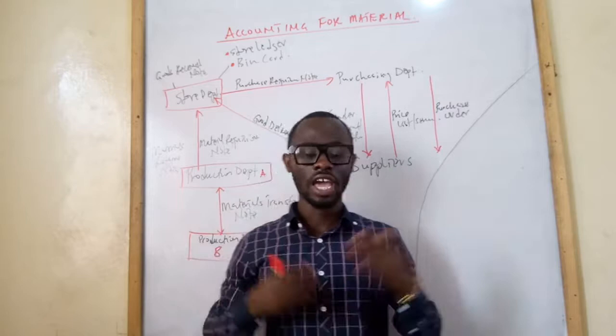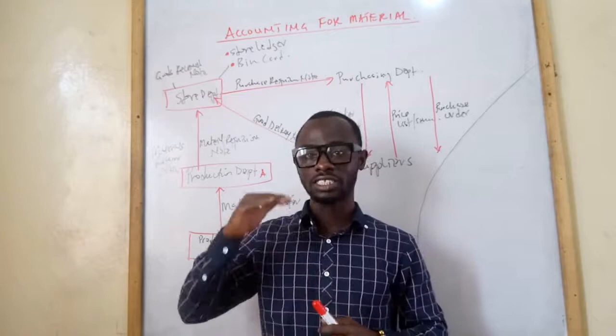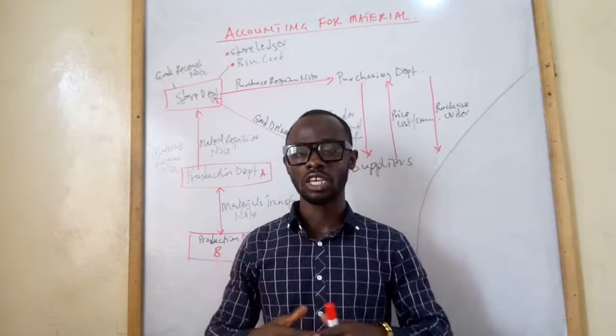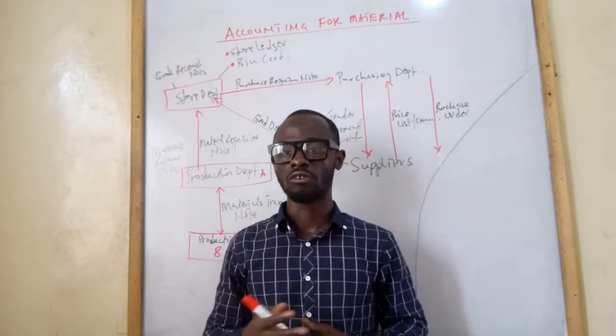The seventh step is the setting of stock levels. We have the maximum stock level, the minimum stock level, the reorder stock level, and the average stock level. These are the major stock levels that companies maintain in order to have resources available to meet demand and avoid production stoppage.